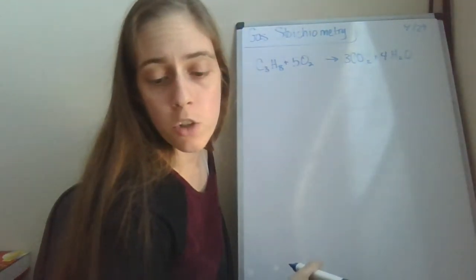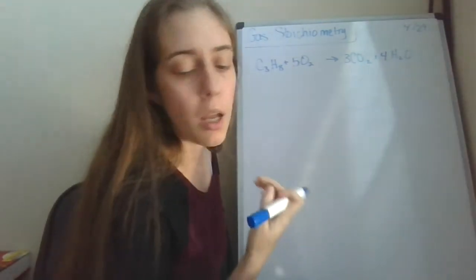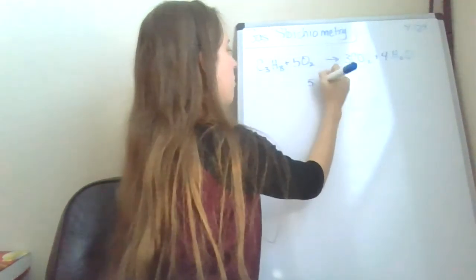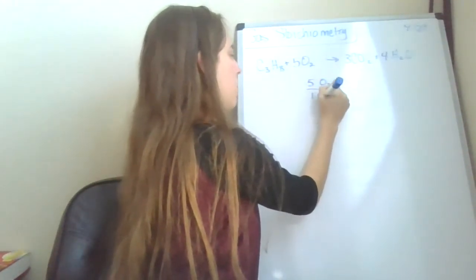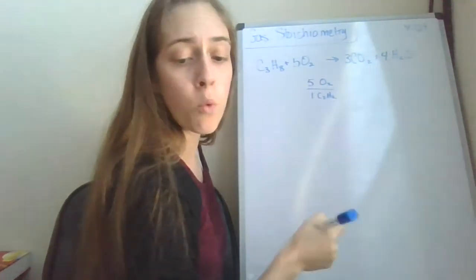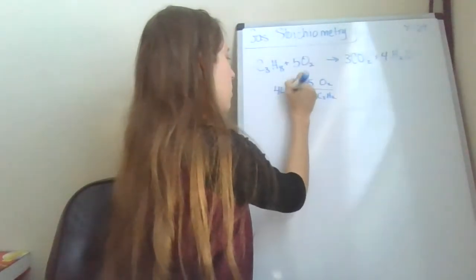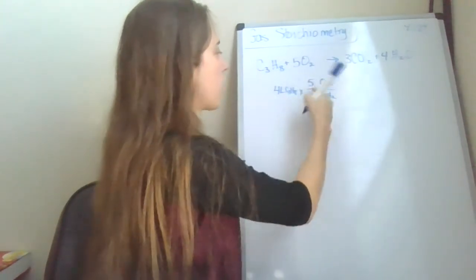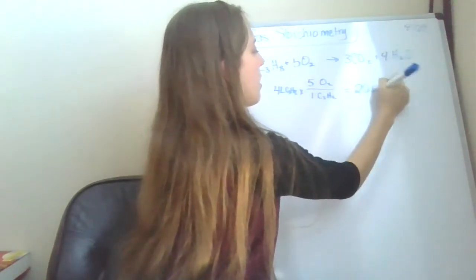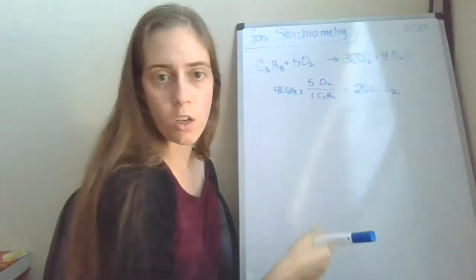The problem asked what volume of oxygen gas is needed for the complete combustion of 4 liters of propane. So we're looking for oxygen when we have propane. That ratio is going to be 5 to 1. 5 of oxygen for every 1 of propane. We have 4 liters of propane. We multiply that by our conversion factor, which is 5 over 1. 4 times 5 equals 20 liters O2. So we're going to need 20 liters of oxygen in order for that to happen.